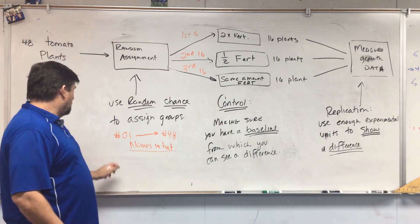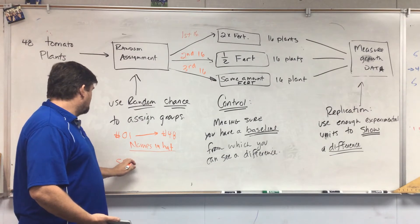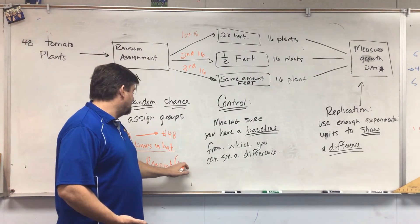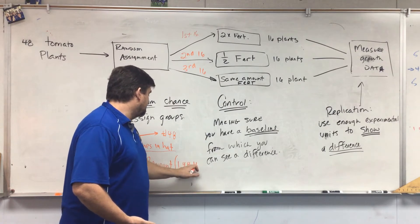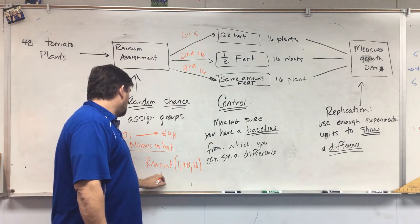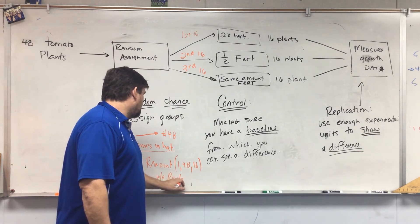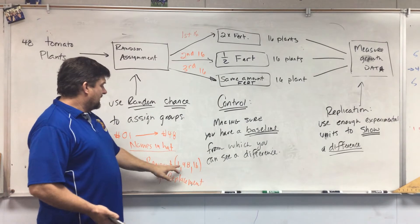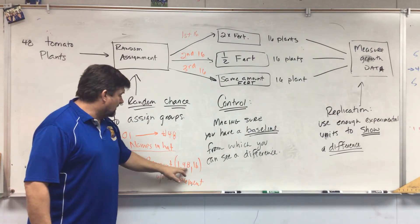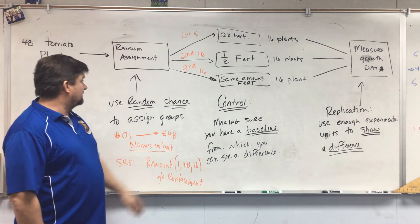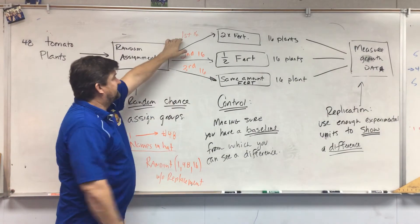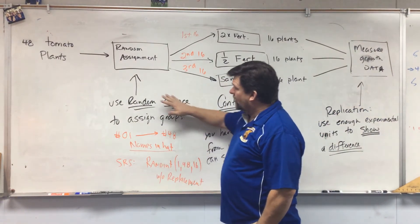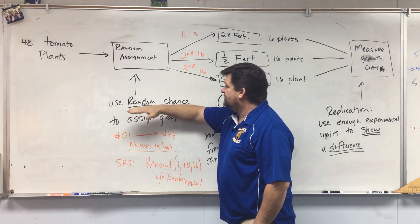Make sure you explain this in detail. You can use a simple random sample using randInt(1, 48) and generate 16 numbers without replacement, so you don't get the same number twice. Once a tomato plant is selected and moved to a group, it's gone. This gives you a list of 16 numbers, and you take all those corresponding plants and put them in that group. That's the idea of a completely randomized design — you always use random chance to assign the groups.